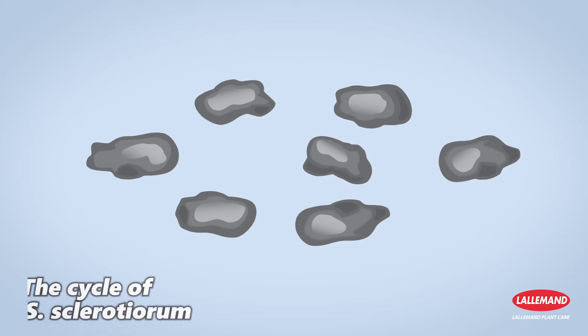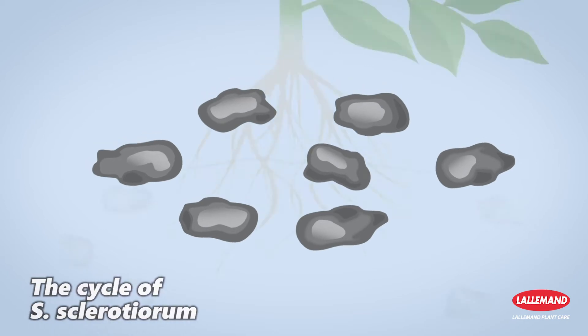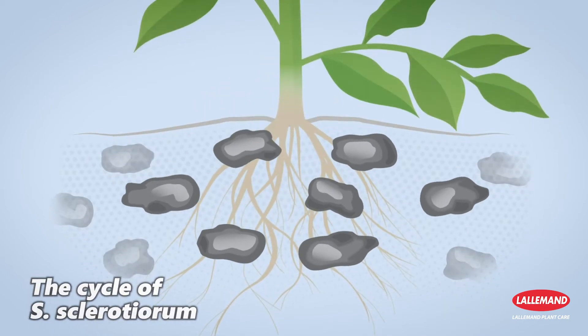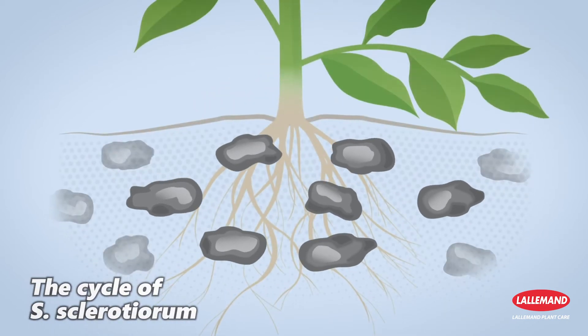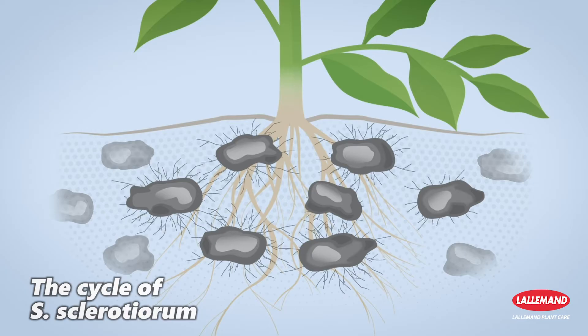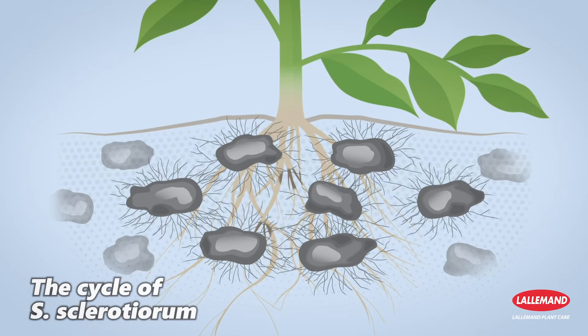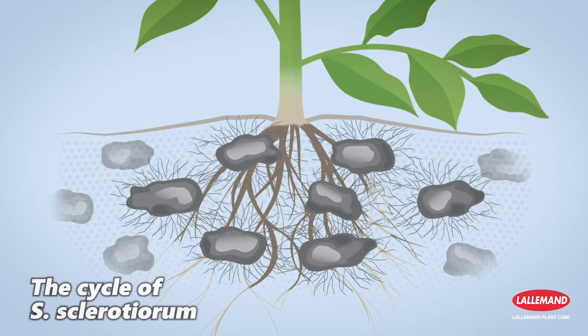The Sclerotinia sclerotiorum cycle begins in the soil, the reservoir of the disease. In the spring, when temperature and humidity conditions are favourable, the sclerotia germinate and form a mycelium which affects the root system of susceptible crops.